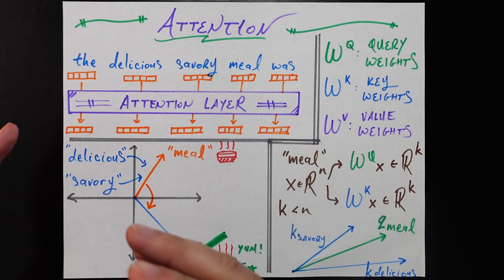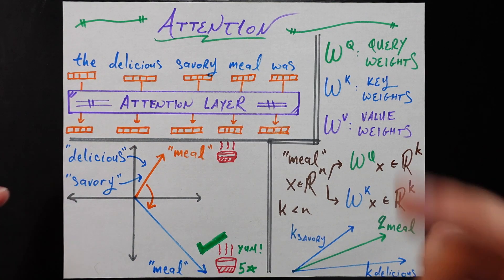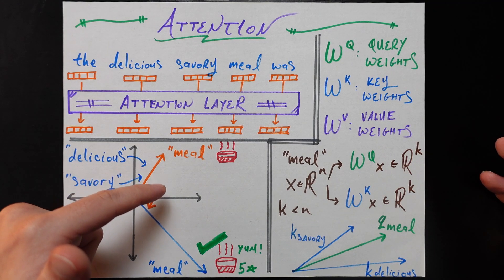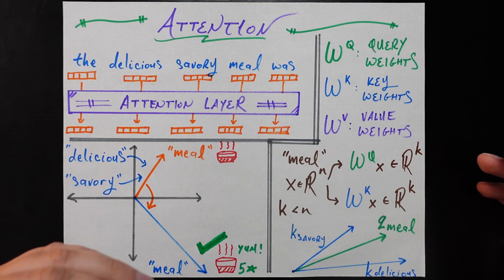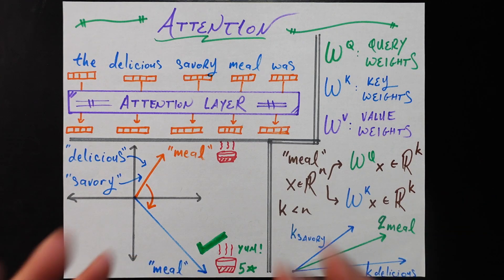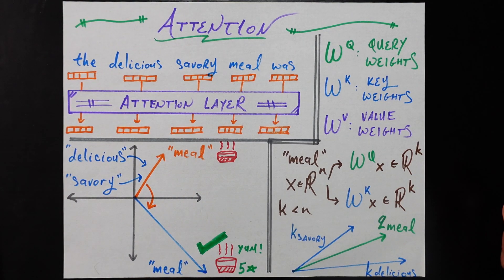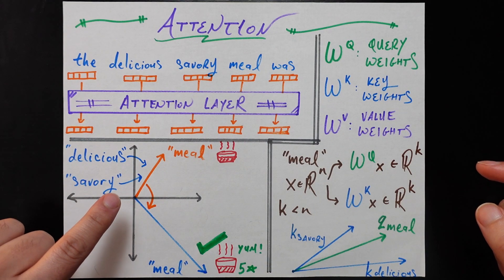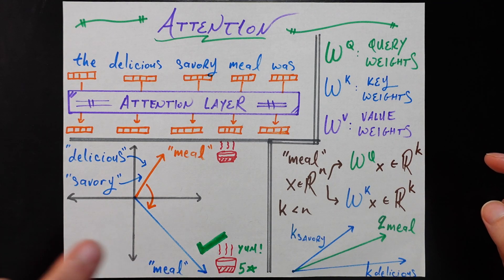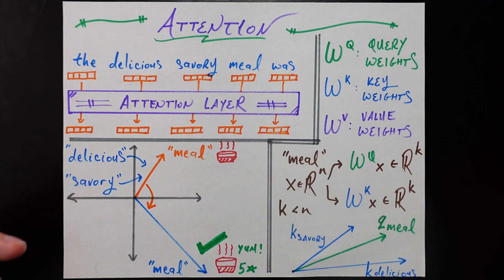Knowing that information, the embedding for 'meal' — this generic meal — gets modified using the embeddings for 'savory' and 'delicious' and anything else that's modifying that meal, to a more precise embedding in this embedding space which represents the concept of a delicious savory meal. A meal that is yummy, five stars, just this amazing meal — that's what's being represented by this new vector once we've allowed the original vector to be modified by the vectors for 'delicious' and 'savory.' And it's exactly this more precise, context-aware embedding that is going to help us predict that the final missing word should be 'divine' instead of 'good' or 'dreadful.'